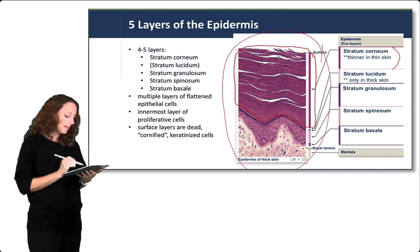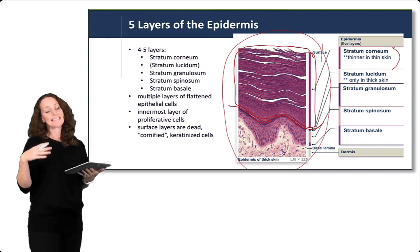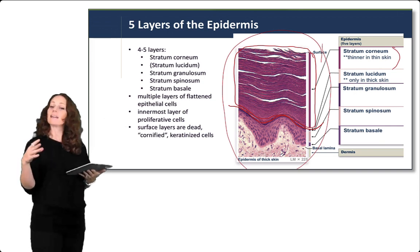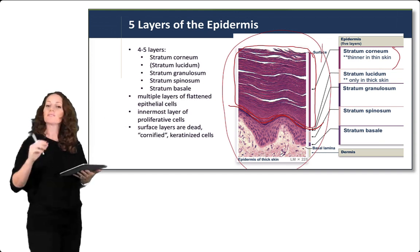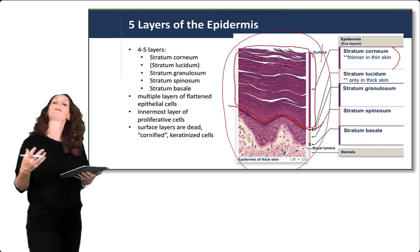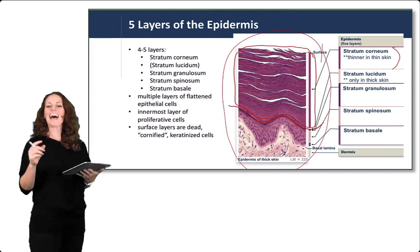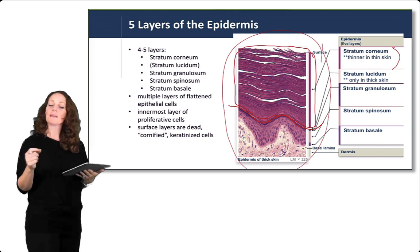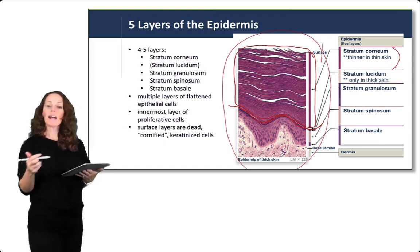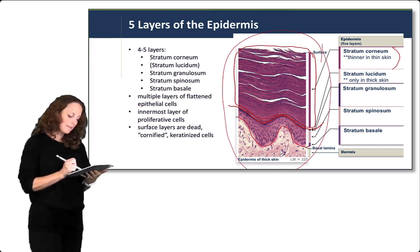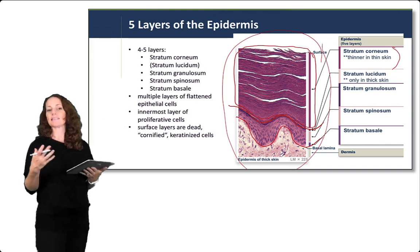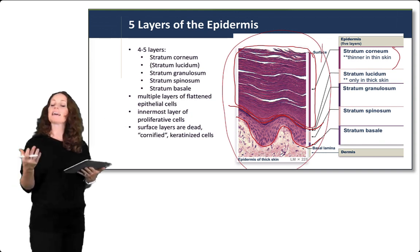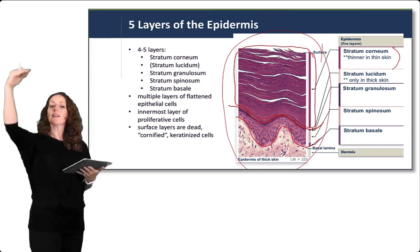Just underneath the stratum corneum is the stratum lucidum, named because it often doesn't stain well — lucidum meaning light, as light passes through it. Stratum lucidum is only found in thick skin. Underneath is the stratum granulosum, named for its grainy appearance when stained. Below that is the stratum spinosum, where cells appear more spiny in shape. Finally, the very bottom layer is the stratum basale — the basal layer containing stem cells and proliferative cells that give rise to all the other layers of the skin.